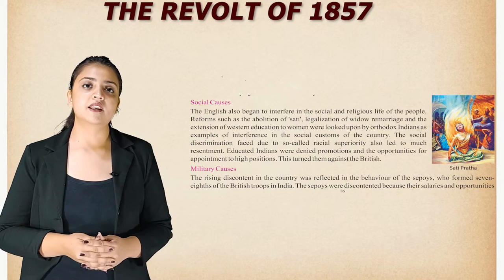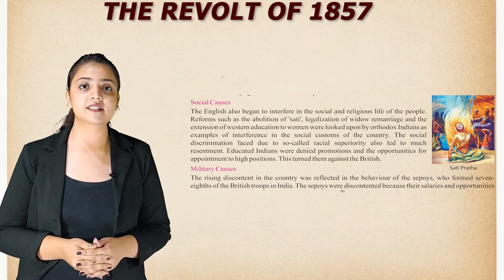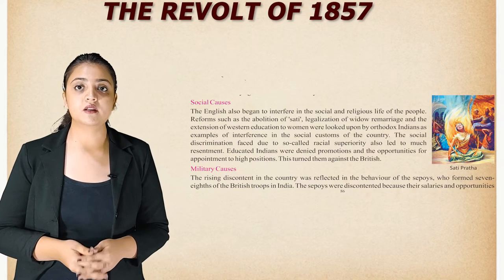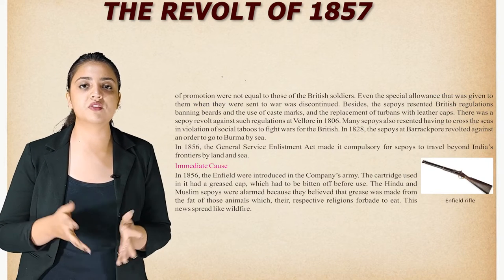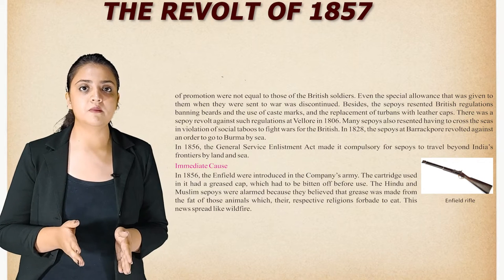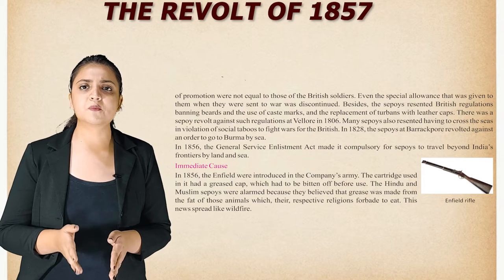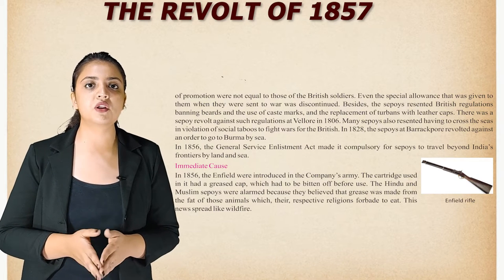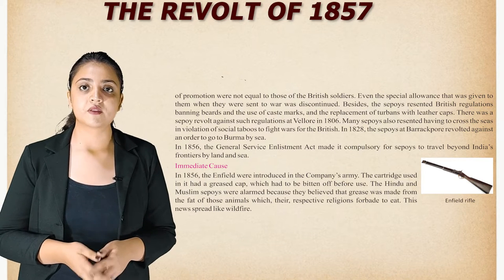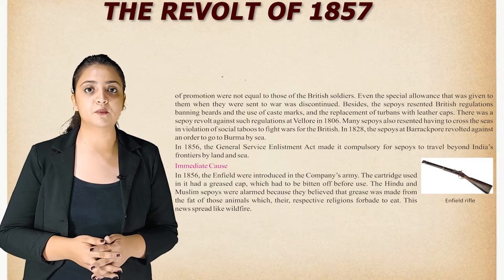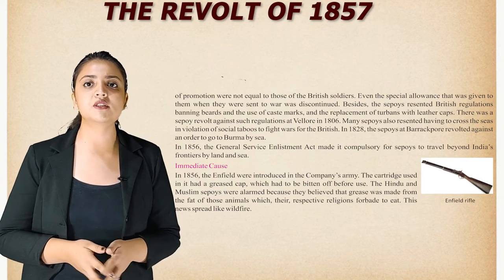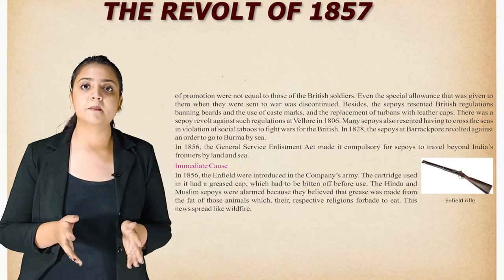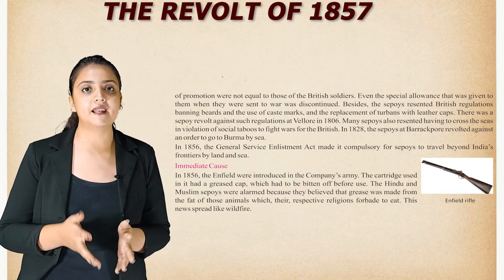Regarding military causes, the rising discontent in the country was reflected in the behaviour of the sepoys, who formed seven-eighths of the British troops in India. The sepoys were discontent because their salaries and promotion opportunities were not equal to those of British soldiers, and special allowances given when sent to war were discontinued. The sepoys also resented British regulations banning weirs, the use of caste marks, and replacement of turbans with leather caps. There was a sepoys revolt at Vellore in 1806. Many sepoys resented having to cross seas in violation of social taboos. In 1856, the General Service Enlistment Act made it compulsory for sepoys to travel beyond India's frontiers by land and sea.